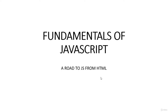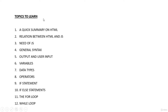Here is a quick summary of the topics to learn: a quick summary on HTML, the relation between JavaScript and HTML, the need for JavaScript, the general syntax, how to get output, how to give user input, variables, how to declare variables, operations on variables including mathematical and comparison operators, data types, if statements, for loop, and while loop. These are the basic things we're going to cover in this course.